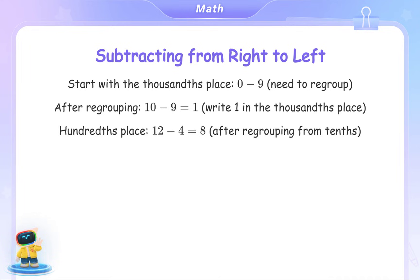In the hundredths place, after regrouping, we have 12 minus 4 equals 8. In the tenths place, 7 minus 2 equals 5.